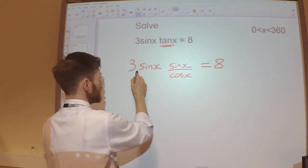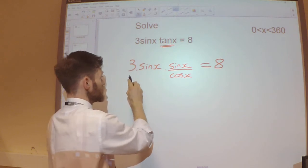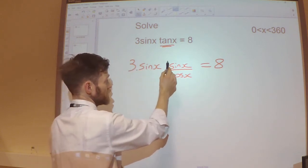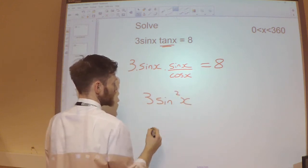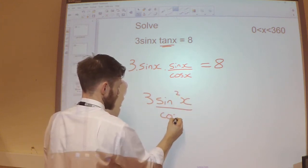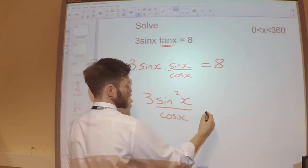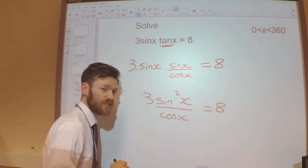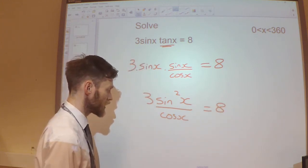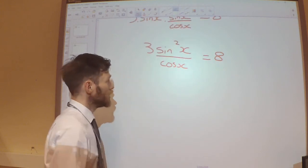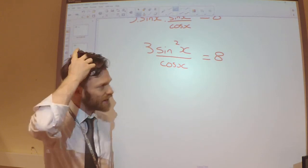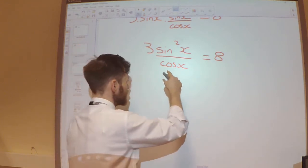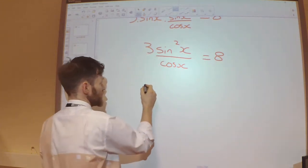So multiplying 3 times sine x times sine x will give me 3 sin squared x divided by cos x is equal to 8. So I don't like the fact that I've got this cos x on the denominator there. That's making it a little bit complicated. So let's multiply both sides by the cos x.